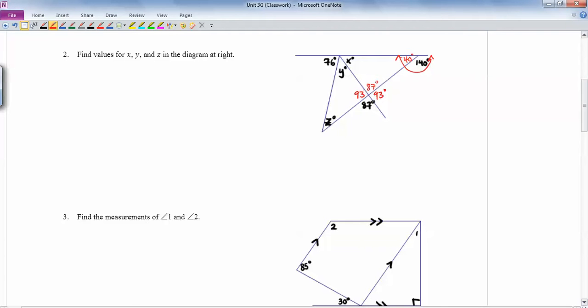So x, we can solve for x at this point because I've got a triangle with two angles that I know in it. So I know that 40 plus 87 plus x is going to be 180. So if I solve for x, that's 127. 180 minus 127 will be 53. So x is 53.